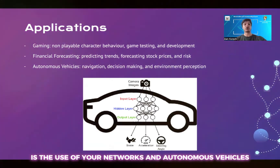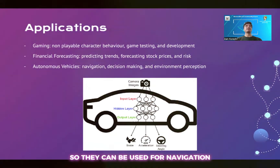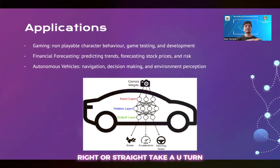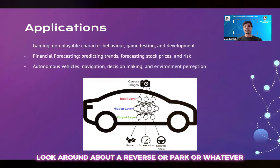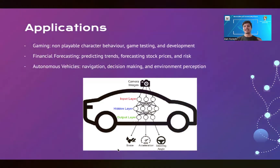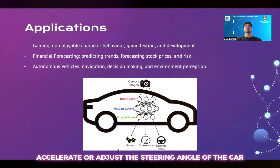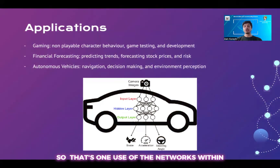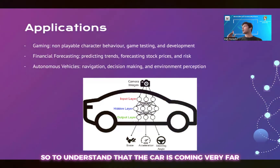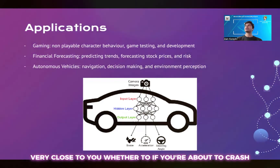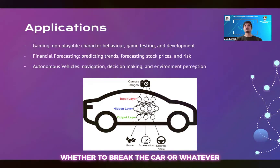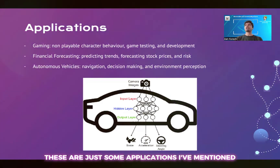Another very important application is the use of neural networks in autonomous vehicles. They can be used for navigation — understanding whether to turn left, right, go straight, take a U-turn, reverse, or park. You can also use them for decision-making, such as whether to brake, accelerate, or adjust the steering angle of the car. They are also used for environment perception — understanding if a car is coming very close to you, whether you're about to crash, and whether to turn or brake accordingly.